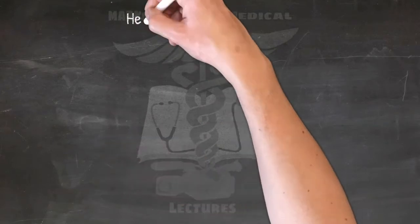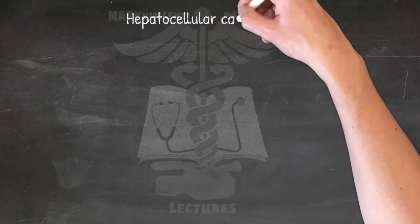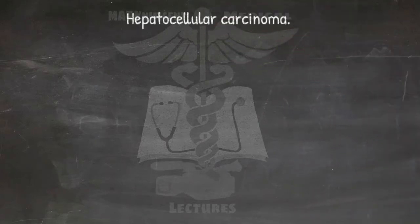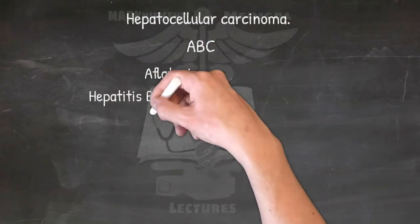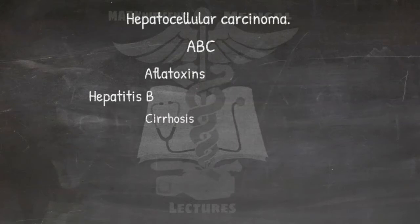The etiology and features of hepatocellular carcinoma: this should be as easy as ABC — Aflatoxins, Hepatitis B, and Cirrhosis. Its features include: Alpha-fetoprotein (a classic marker) is increased; Bile producing — that is its differential diagnosis from cholangiocarcinoma; and it is the commonest primary liver tumor.